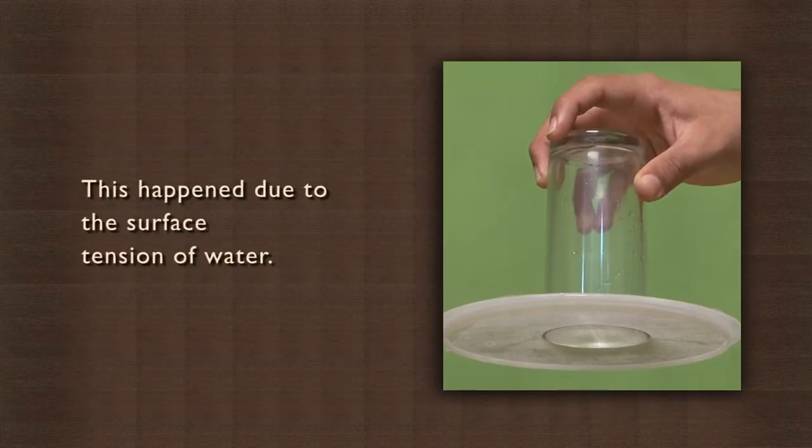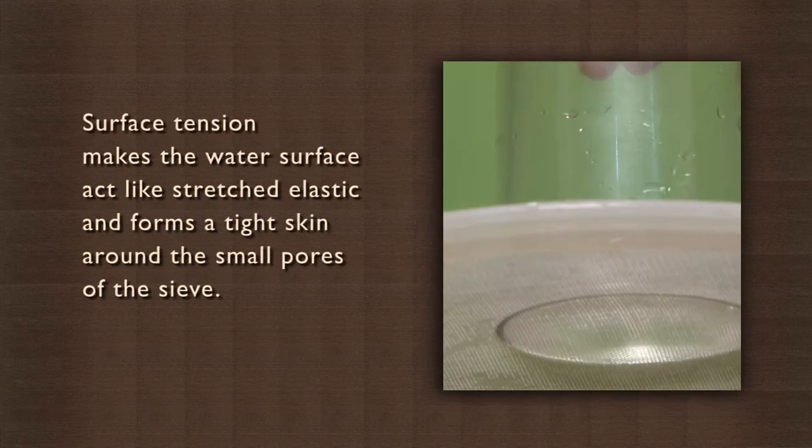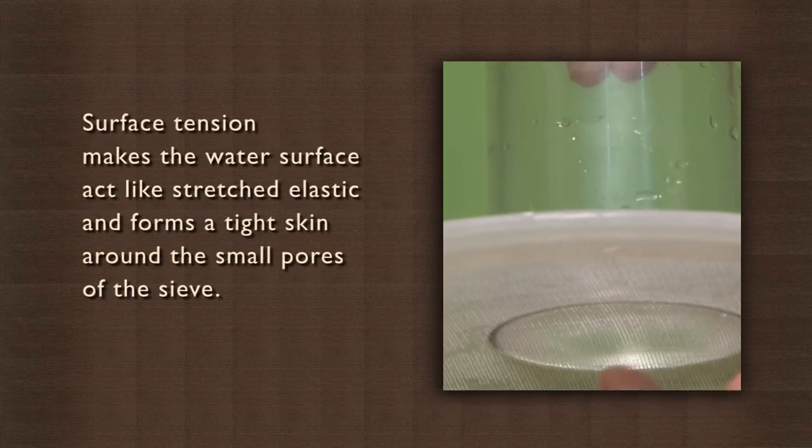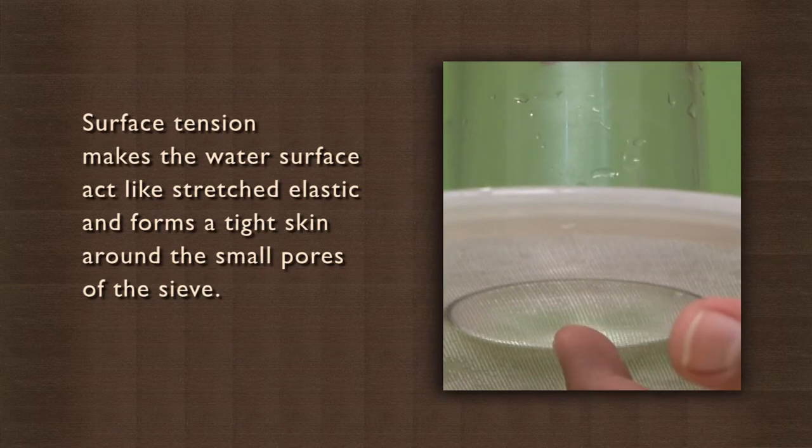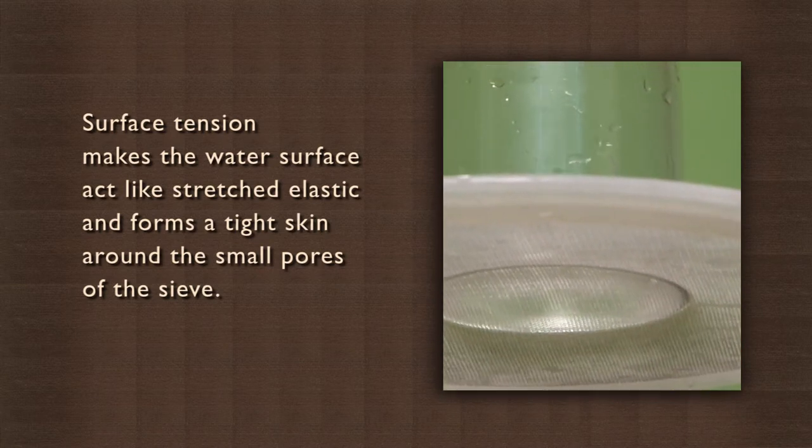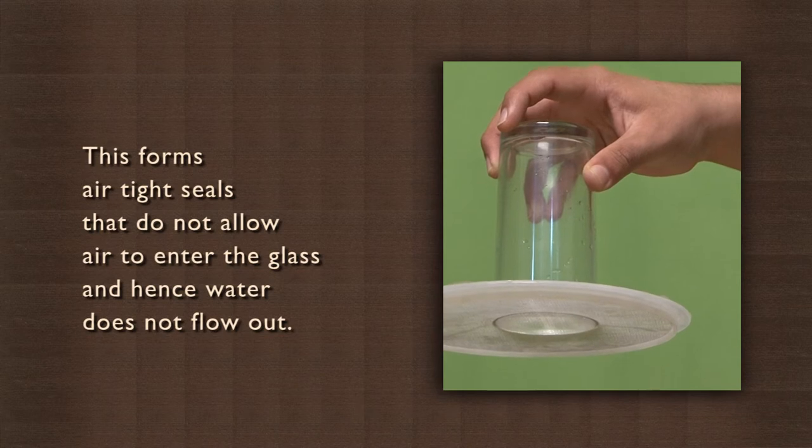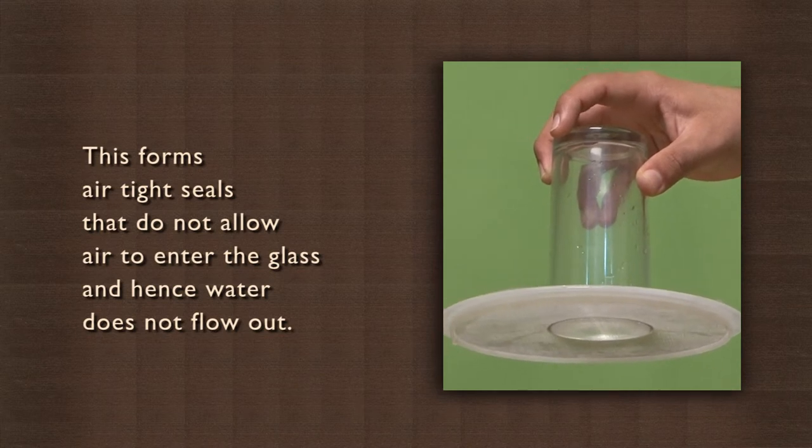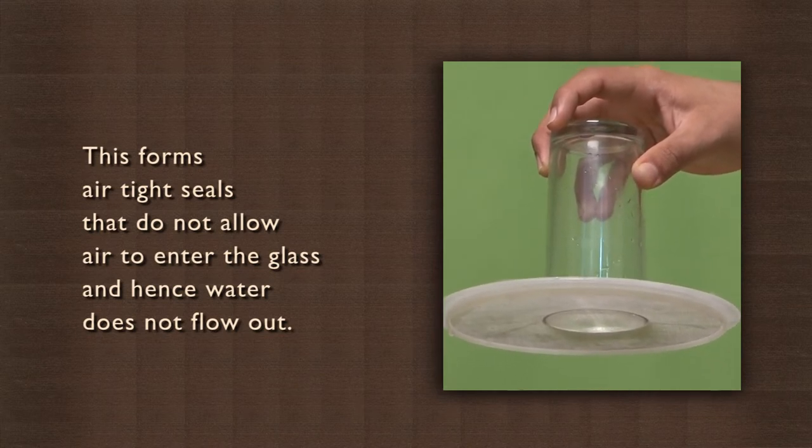This happened due to the surface tension of water. Surface tension makes the water surface act like stretched elastic and forms a tight skin around the small pores of the sieve. This forms airtight seals that do not allow air to enter the glass and hence water does not flow out.